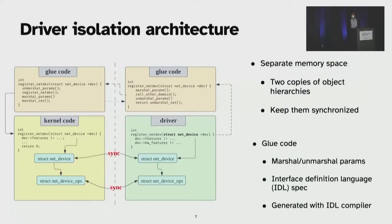And in order to keep them in sync and to communicate between the isolated and non-isolated part, we need some glue code that takes care of marshaling and unmarshaling the parameters that are necessary for functional correctness, which are typically generated from an IDL specification, which is automatically generated from the IDL compiler.